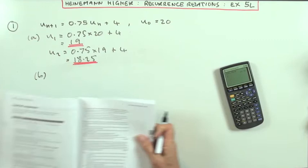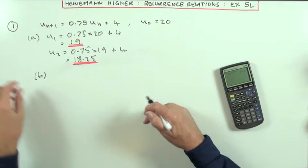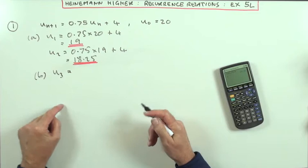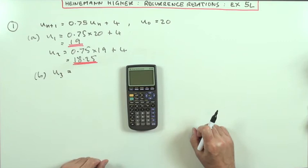Part B says, what's the smallest value of n for which the term U_n stays less than 17? Well, that's just a case of plodding on. I'd have to find U₃, U₄, U₅, U₆ and so on until I got to the one that dropped below 17. And then that would be the value of n that would be required.